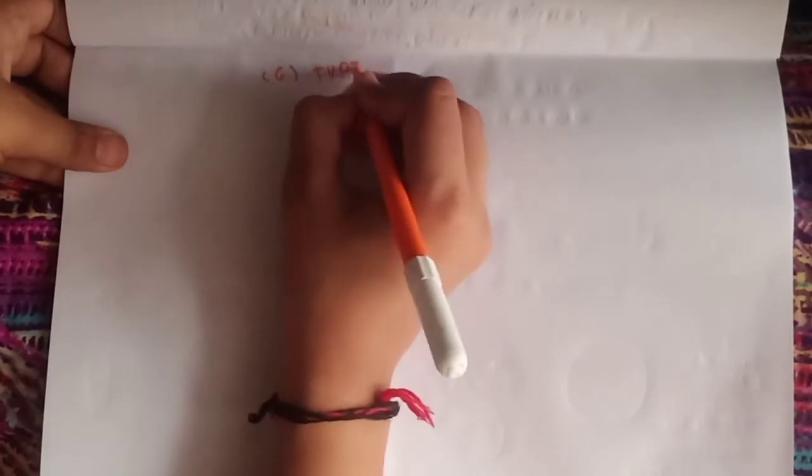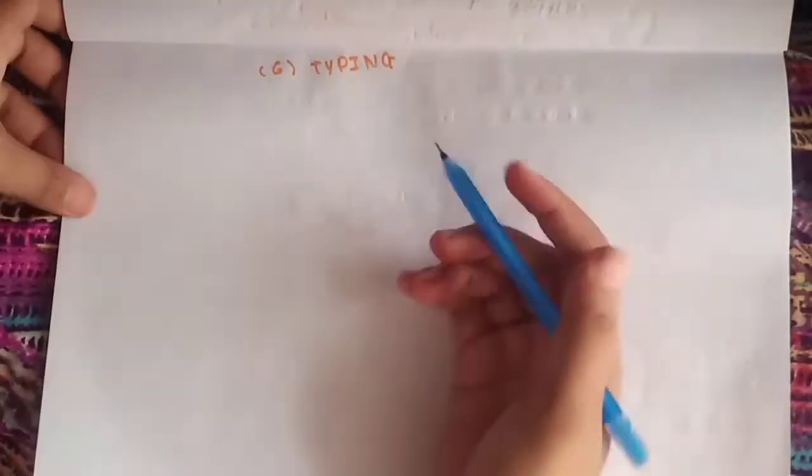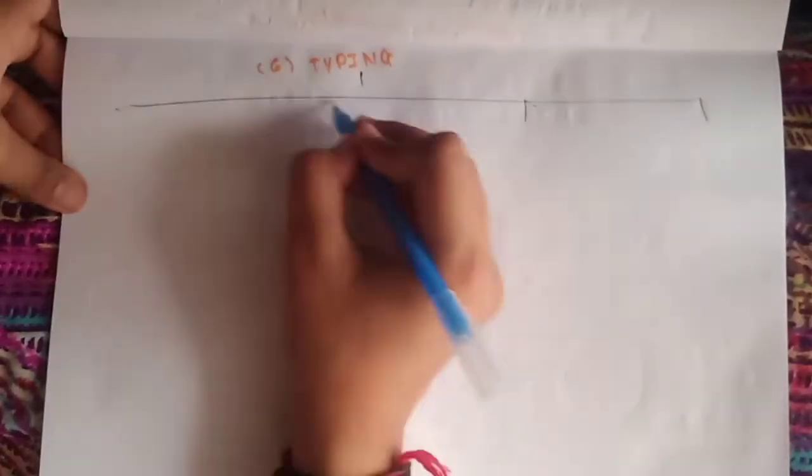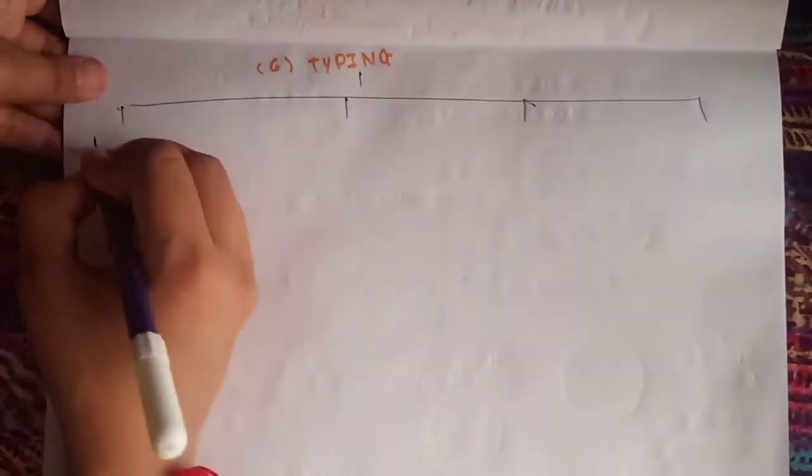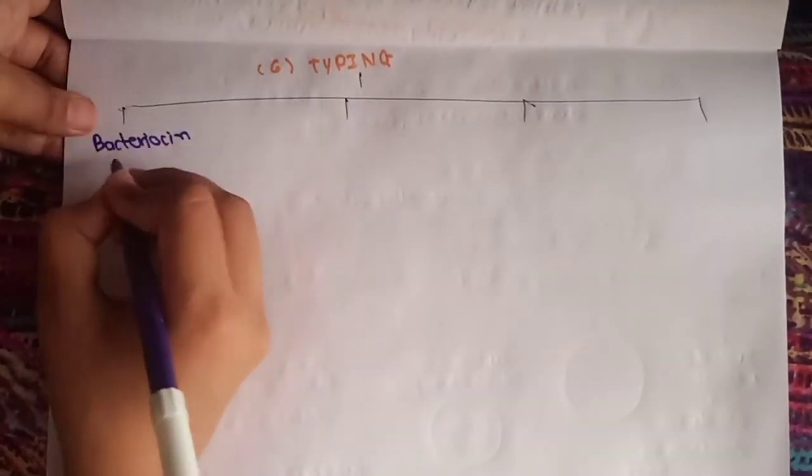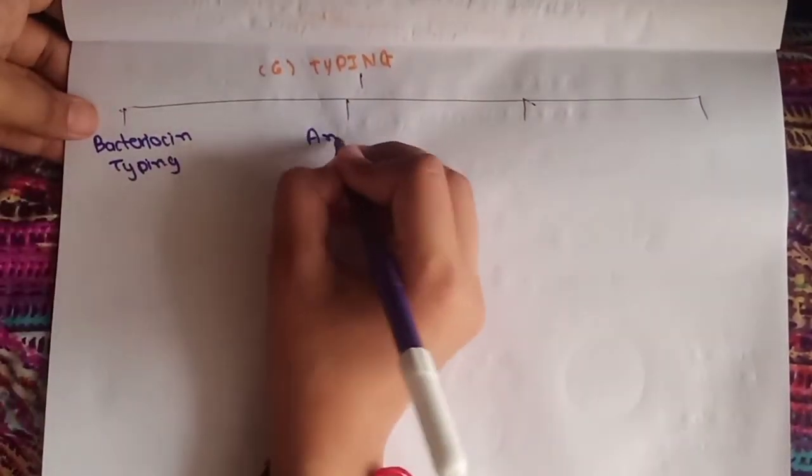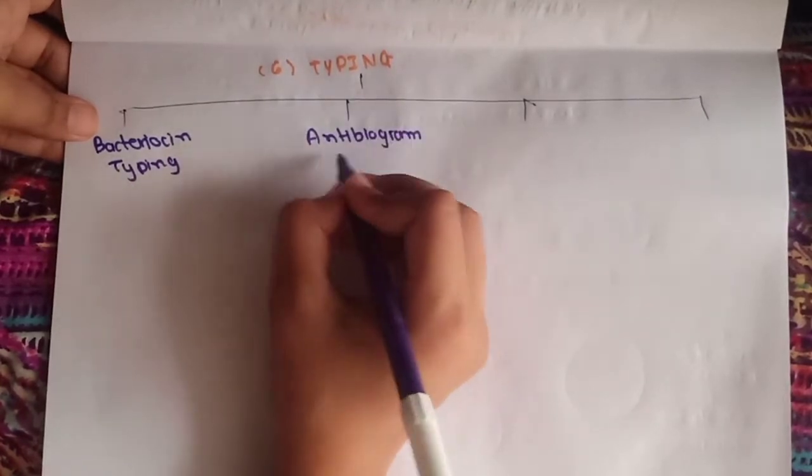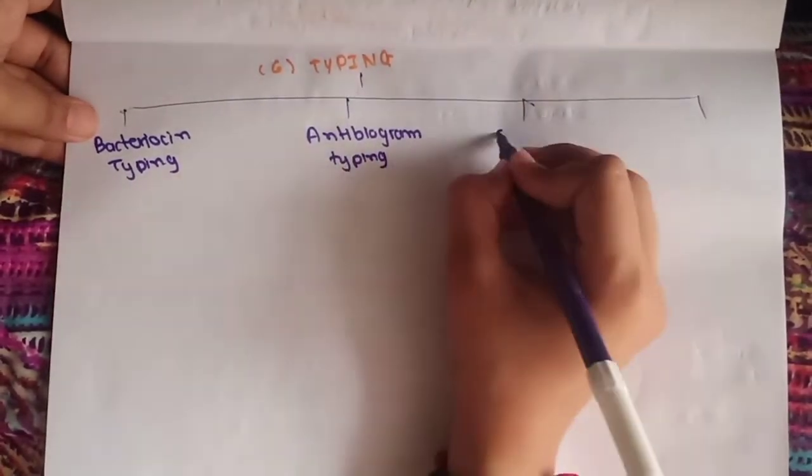Now the last laboratory diagnosis is typing of Pseudomonas. Typing of Pseudomonas includes four types: first is bacteriocin typing, second is antibiogram typing, third is serogrouping, and fourth is molecular methods.